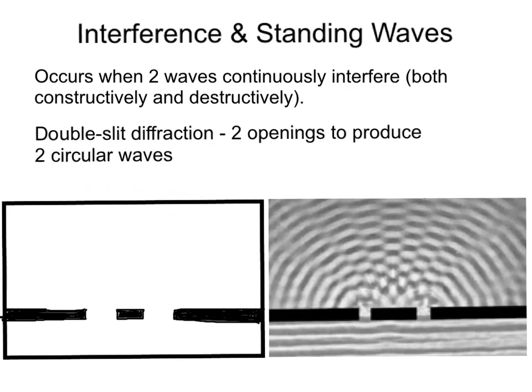Interference and standing waves. This occurs when two waves continuously interfere, both constructively and destructively. Recall, we need two waves to meet. In our string app, we saw two crests meeting to make a bigger crest constructively, or a crest and a trough meeting to interfere destructively.